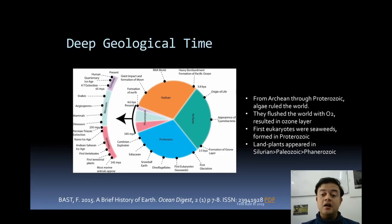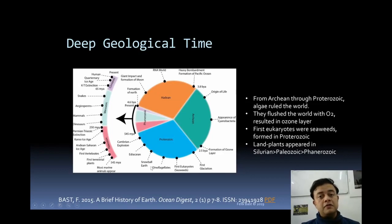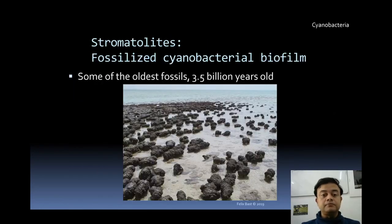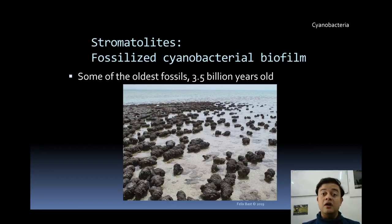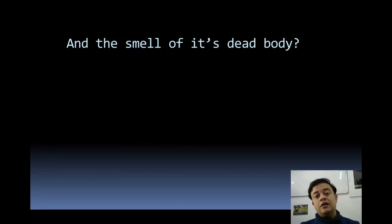The oldest eukaryotic fossil ever detected is a red alga. Land plants appeared much later, in the Silurian during the Phanerozoic Paleozoic period. For most of Earth's geologic history, algae ruled. Some of the oldest fossils found on Earth are algae — stromatolites. This picture from Darwin, Australia shows stromatolites that are 3.5 billion years old. Stromatolites are cyanobacterial biofilms forming rock-like layered structures.